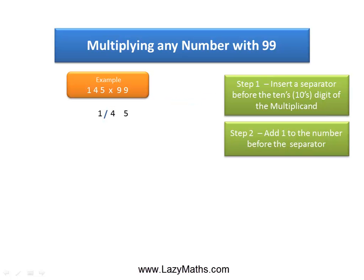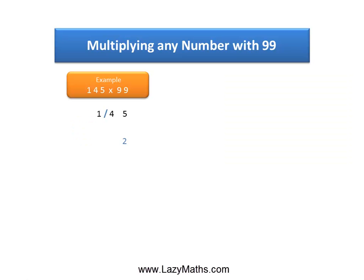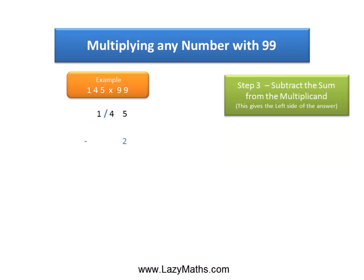The next step is to add 1 to the number before the separator. The number before the separator is 1. We add 1 to the 1 and we get 2. 1 plus 1 is 2. The next step is to subtract the 2 from 145. Subtracting 2 from 145 gives us 143.